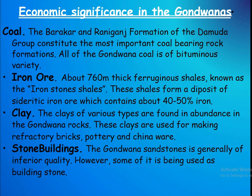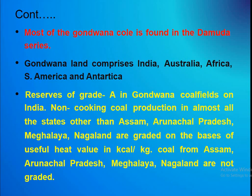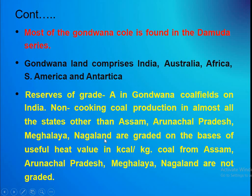Stone buildings: The Gondwana sandstones are generally of inferior quality; however, some of it has been used as building stone. Most of the Gondwana coal is found in the Damuda series. The Gondwana land comprises India, Australia, Africa, South Africa, and Antarctica. Non-coking coal production in almost all states other than Assam, Arunachal Pradesh, Meghalaya, and Nagaland is graded on the basis of gross heat value in kilocalories per kg.